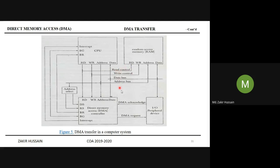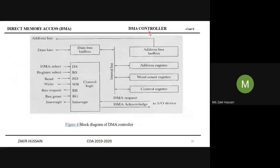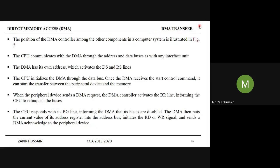The memory bus consists of all those signals together. We have seen how the DMA controller works — the address register, word count register, control register, bus request, interrupt — everything was discussed yesterday. Those who want to revise can go and see the DMA controller video on YouTube. Today is about DMA transfer.